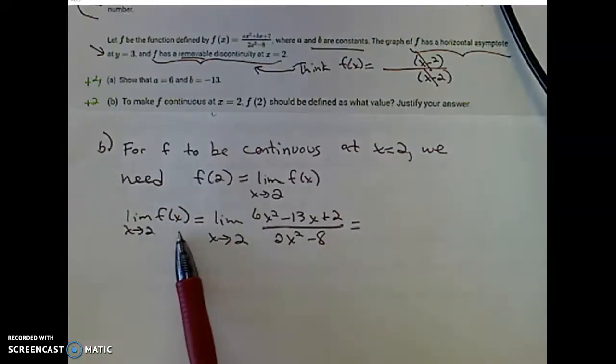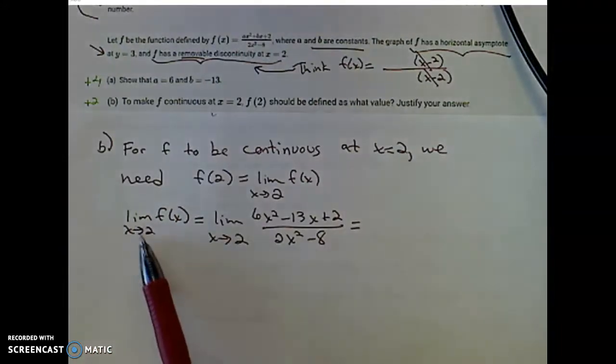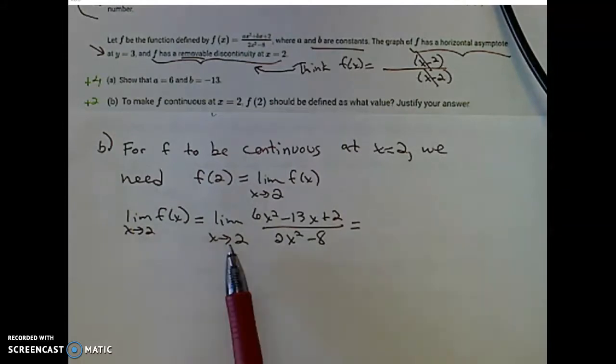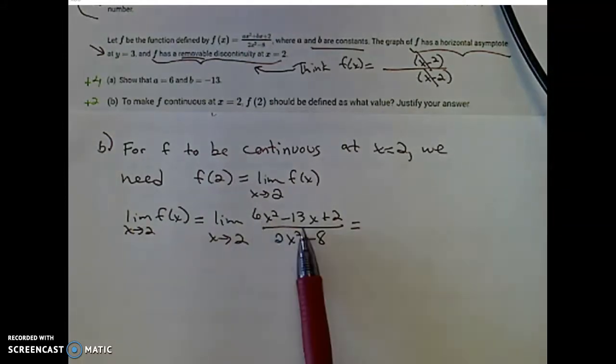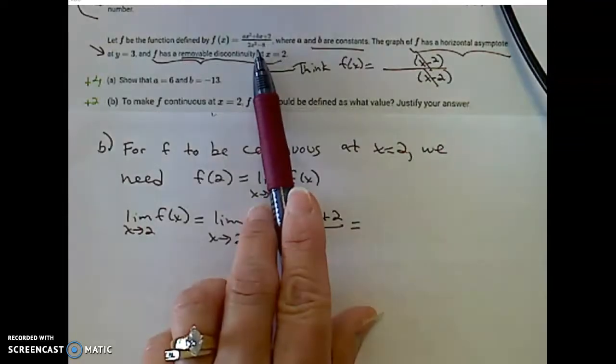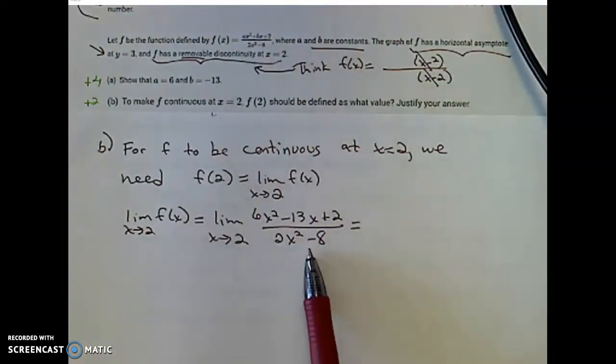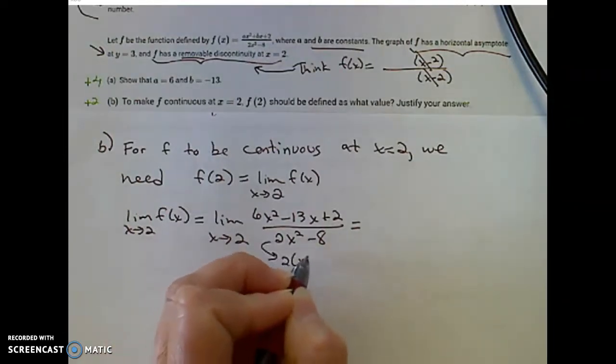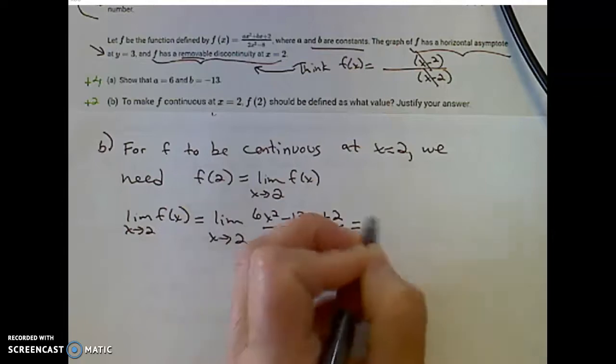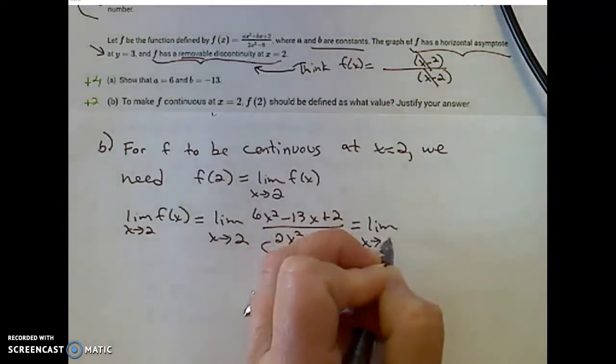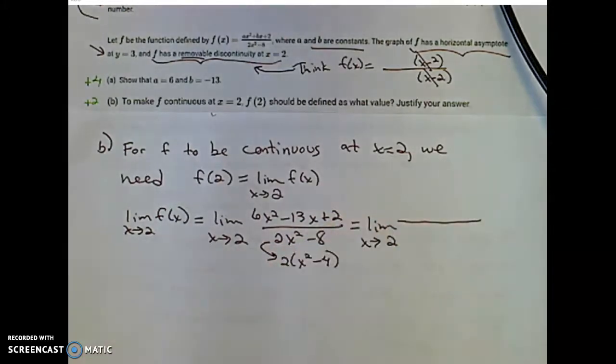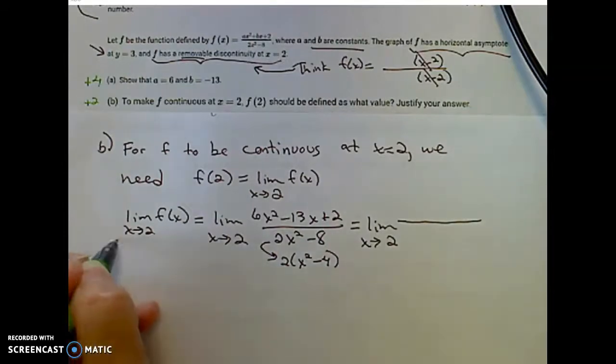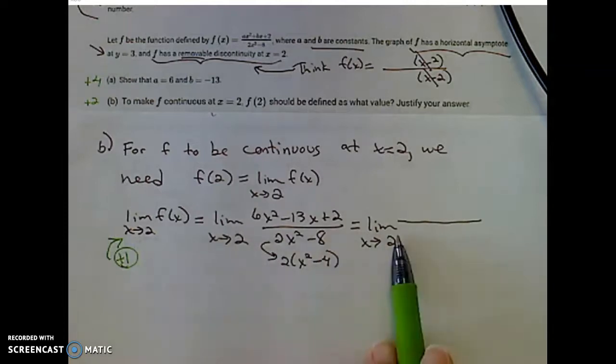Let's plug in our function f of x. We'll find the limit as x approaches 2 of that function f of x to be the limit as x approaches 2 of plug in your a, plug in your b value into that function f of x, all over 2x squared minus 8. This factors to 2 times x squared minus 4. And now I can rewrite that limit as x approaches 2. I'm going to factor numerator and denominator. You got one point for this limit notation, which some of you are missing.